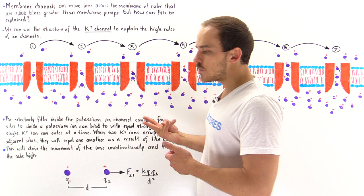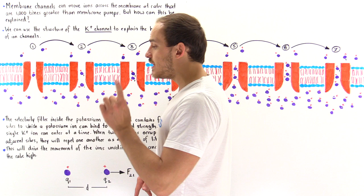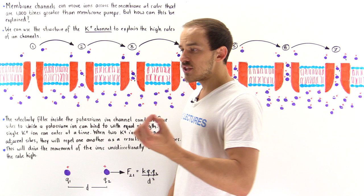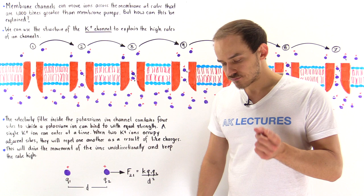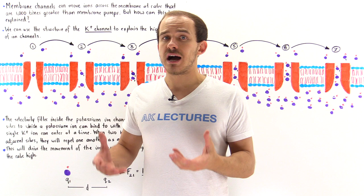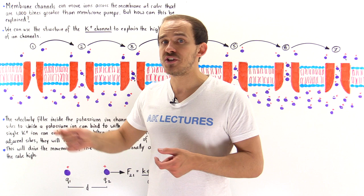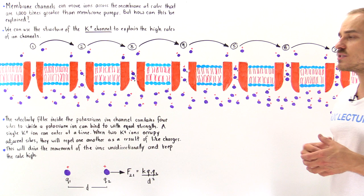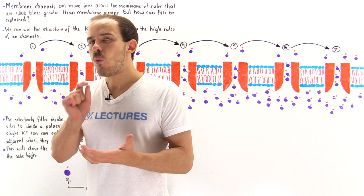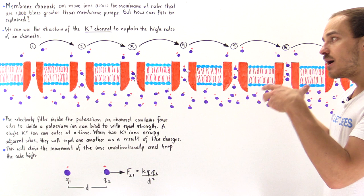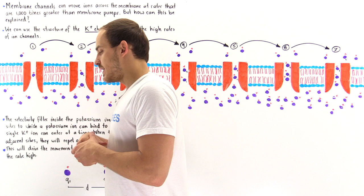The second property of ion channels is that they are not only highly effective but also highly efficient. The rates at which they move ions across the membrane are very high — in fact, over 1000 times greater than the rates at which membrane pumps move molecules and ions across the cell membrane. So what exactly makes them so efficient? What is it about the structure of that membrane protein?